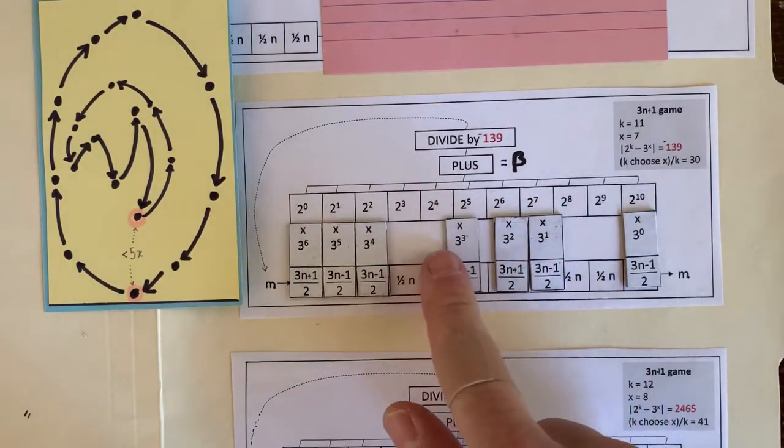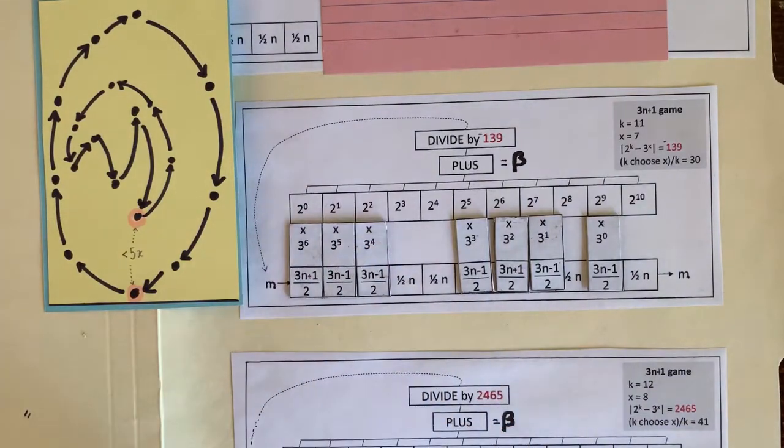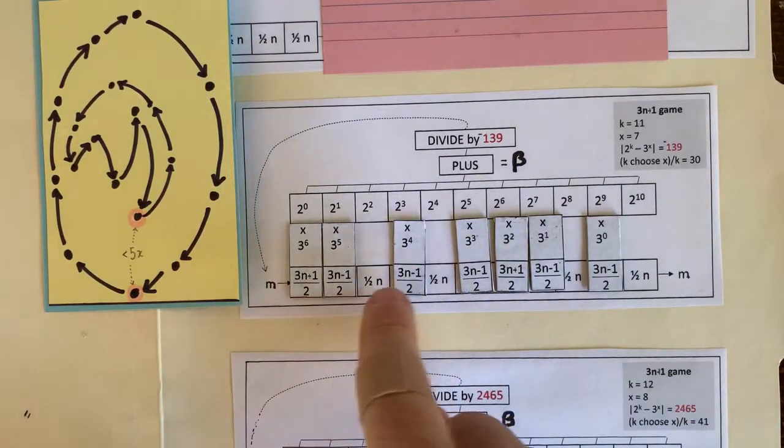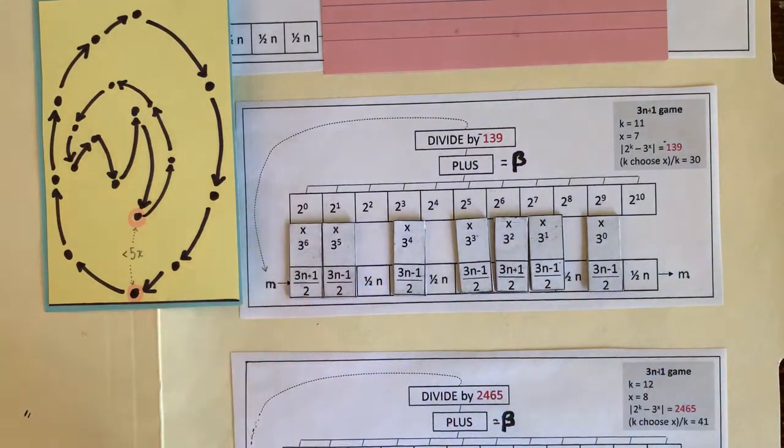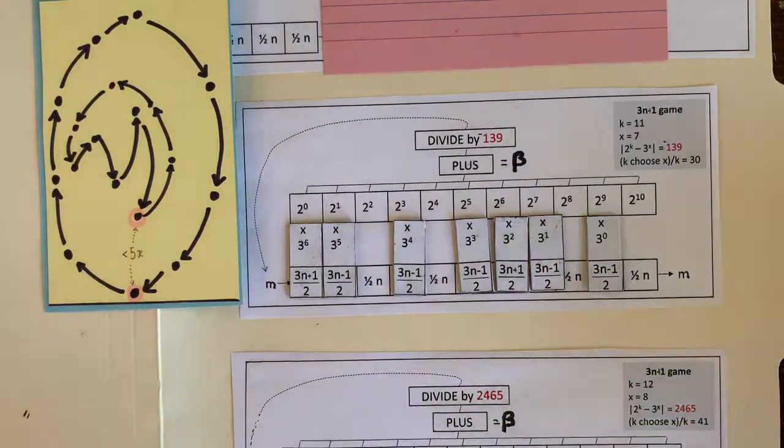There are lots of loops we can make. And it comes back to how we arrange these pieces and solve for m. So each arrangement of pieces gives us some loop that starts at m and ends at m.